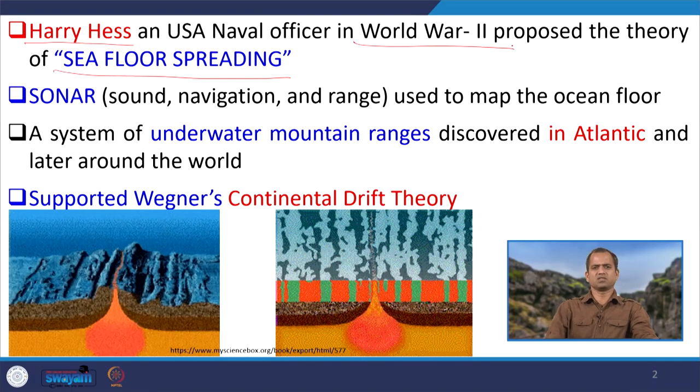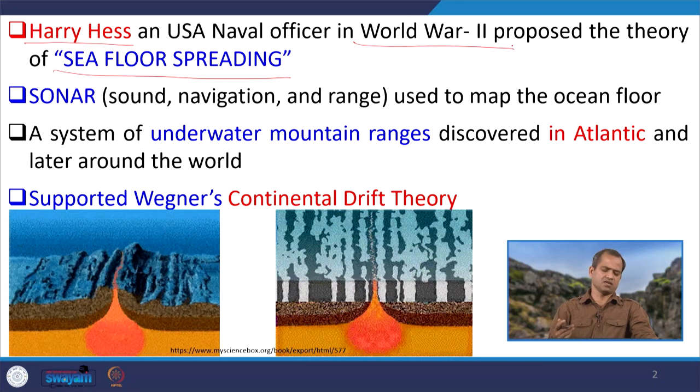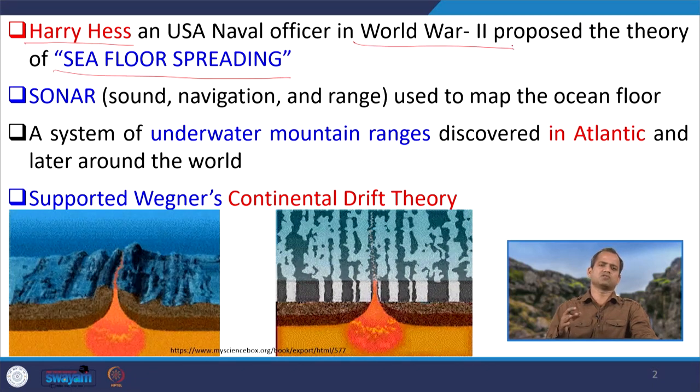Once we know the continents are drifting, whether the oceans are spreading or remain constant has been discussed in this class. Continental drift was proposed by Alfred Wegener. However, Harry Hess, an officer of the US Navy, proposed the sea floor spreading theory during World War II. He argued that yes, the sea floors are spreading.